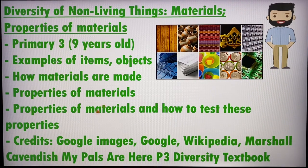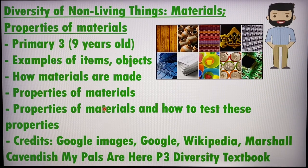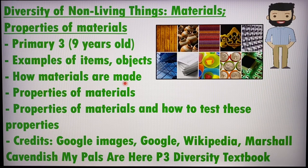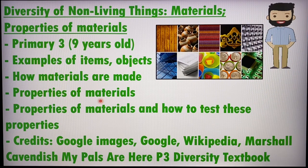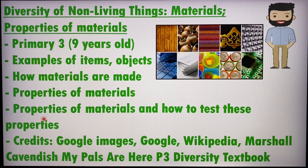What I'll be covering today is under the topic of diversity of non-living things, which is about materials and the properties of materials. These are the four main things I'll be covering: examples of items and objects made of each material, how materials are made or where they are from, the different properties of materials as required by the primary three syllabus, and how we test these properties.